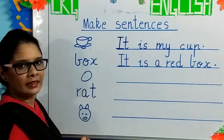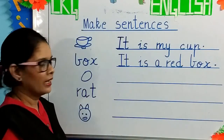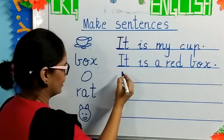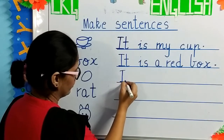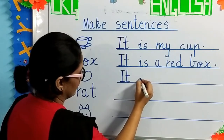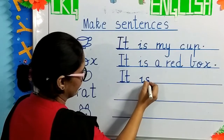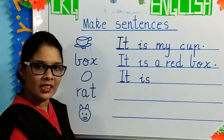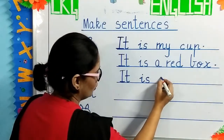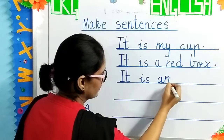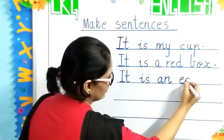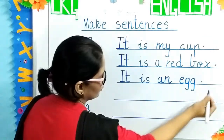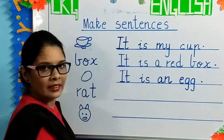The next is an egg — picture of an egg. What will we write? It is an egg. Capital I, T — it is — I, S — is. Why are we writing 'an egg'? Because E is a vowel. So A-N, and egg — E-G-G. And a full stop. An egg — E is a vowel.